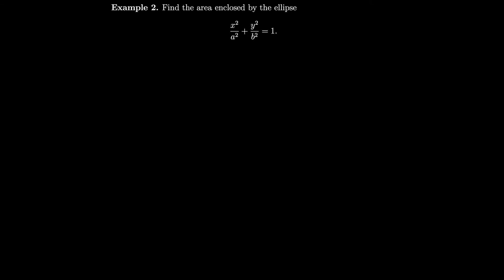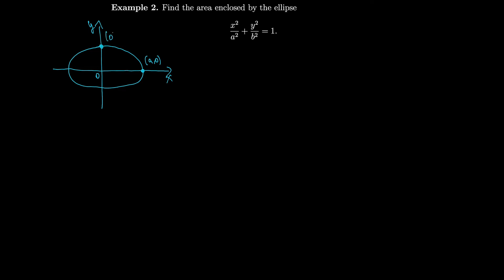Let's find the area enclosed by the ellipse x²/a² + y²/b² = 1. Drawing the ellipse, the x-intercept is (a, 0) and the y-intercept is (0, b). The area of each of the four quadrant pieces are equal, so the total area is four times the area in the first quadrant. That saves us time when setting up the integral.